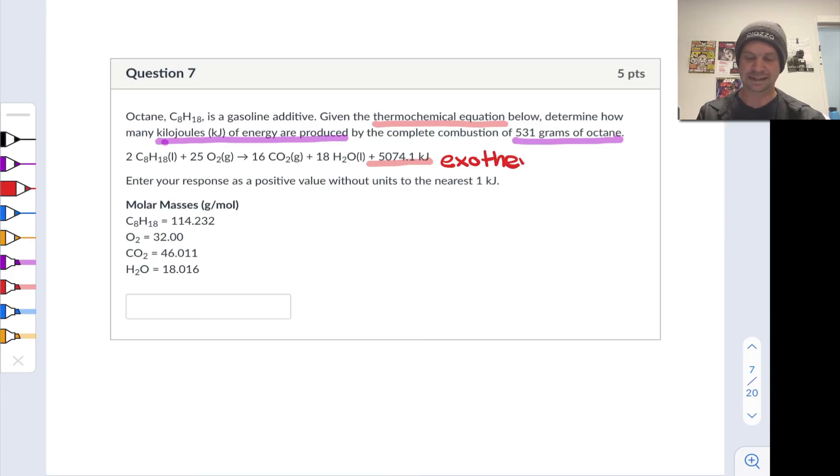This is an exothermic reaction, and the enthalpy showing up there tells us that. That quantity of heat corresponds to the reaction on the molar scale as it's written. So for every two moles of octane that are consumed, we get 5,000 or so kilojoules of heat released.